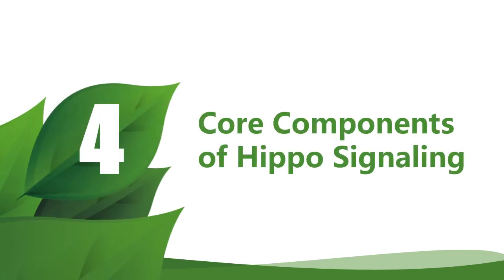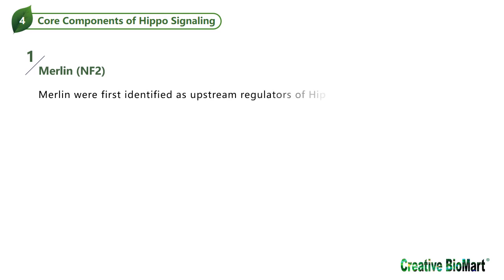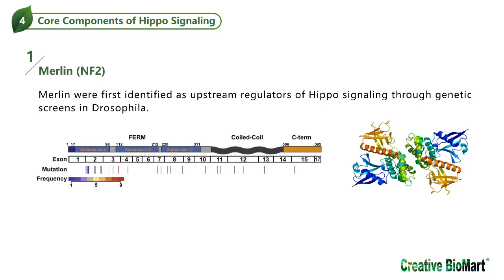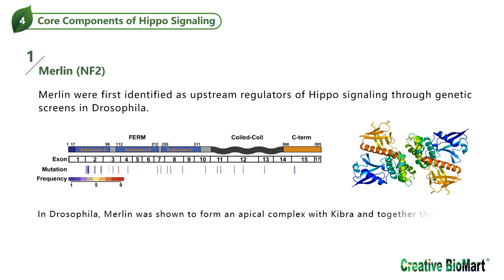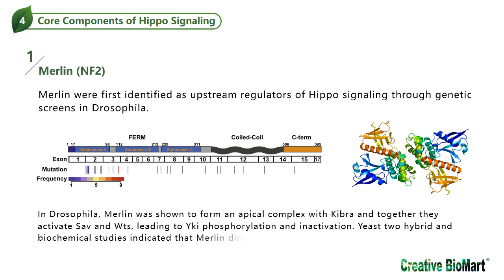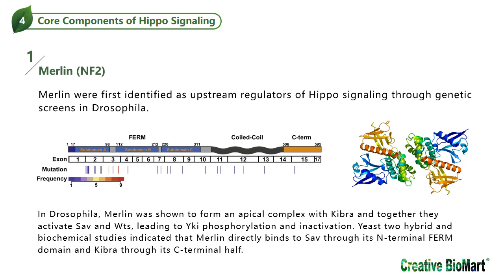Core Components of Hippo Signaling Pathway. Merlin was first identified as an upstream regulator of Hippo signaling through genetic screens in Drosophila. Merlin contains an N-terminal FERM domain that comprises three subdomains organized into a cloverleaf-like structure, followed by a coiled-coil domain and a charged C-terminal tail. In Drosophila, Merlin was shown to form an apical complex with Kibra, and together they activate SAV and WTS, leading to Yorkie phosphorylation and inactivation. Yeast two-hybrid and biochemical studies indicated that Merlin directly binds to SAV through its N-terminal FERM domain, and to Kibra through its C-terminal half.